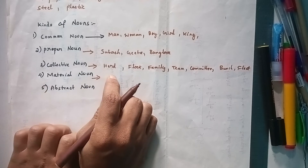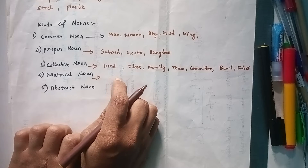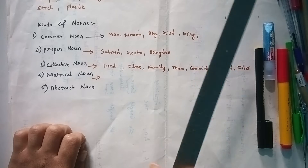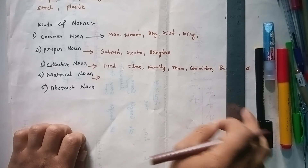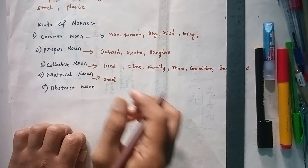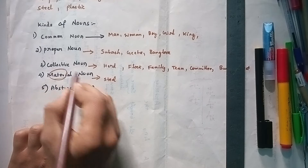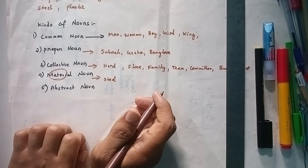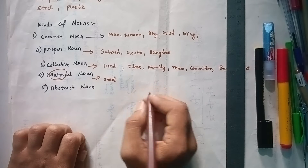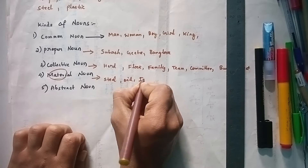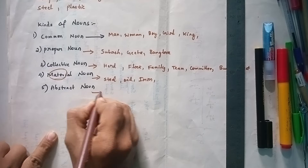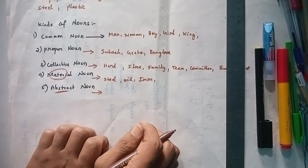Next is material noun. Material noun means the word which is used to indicate the name of a material. For example, steel is a metal — that particular material name is called a material noun. Other examples: oil, iron, gold, and so on.